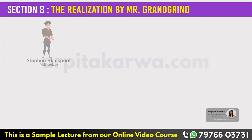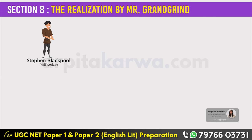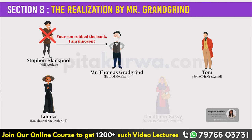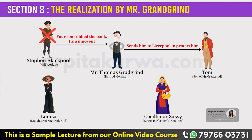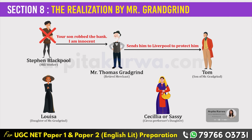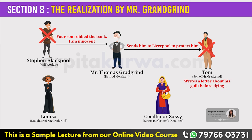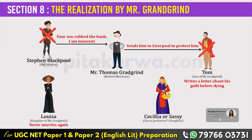Stephen comes back to Coketown to prove his innocence and clear the allegation of robbing the bank. However, on his way he accidentally falls into a pit and dies. Before he dies, he tells Mr. Gradgrind that he is innocent and that the bank was in fact robbed by Gradgrind's own son, Tom. Louisa, Sissy, and Mr. Gradgrind manage to send Tom away to Liverpool to save him from being arrested. Mr. Gradgrind realizes how wrong he was in neglecting emotions and finally understands their importance, dedicating his remaining life to faith, hope, goodness, kindness, and charity instead of facts. Tom dies before writing a letter expressing his regret and guilt. Louisa never remarries or has children, but loves Sissy's children, encouraging them to love and be kind.